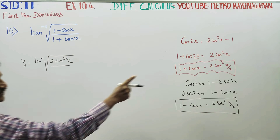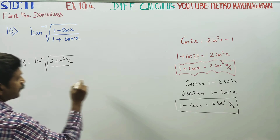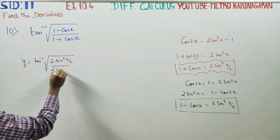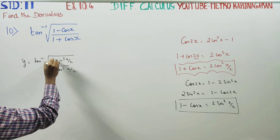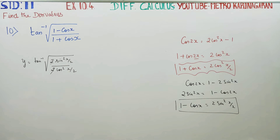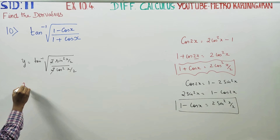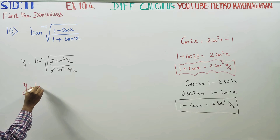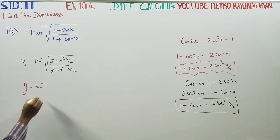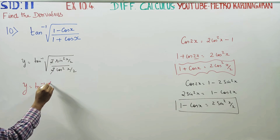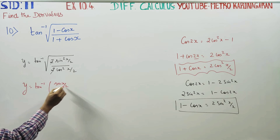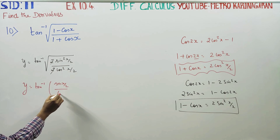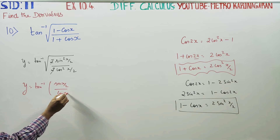And 1 plus cos x equals 2 cos squared (x/2). The 2s cancel, so the expression inside the square root simplifies. Therefore y equals tan inverse of the square root of sin squared (x/2) over cos squared (x/2).